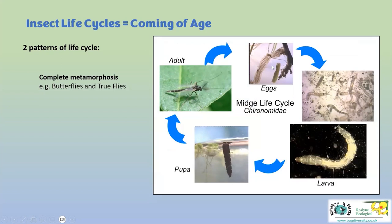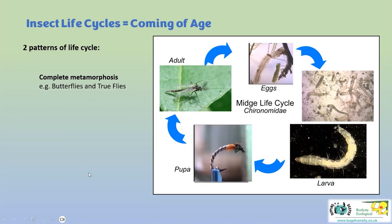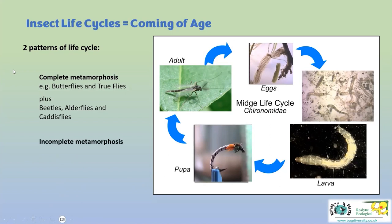Fly fishermen actually imitate one particular fly pupa - they call this pattern a 'grey boy midge' and it does look remarkably like the species of midge it's supposed to represent. Also with complete metamorphosis are the beetles, alderflies and caddis flies - they all have larvae and a pupal stage.